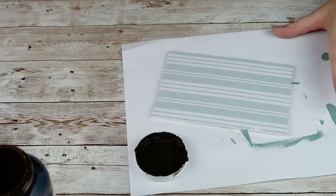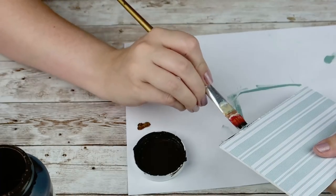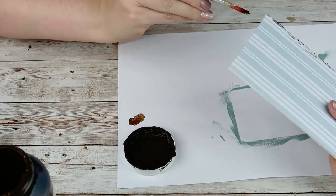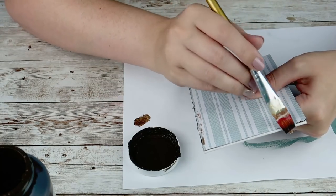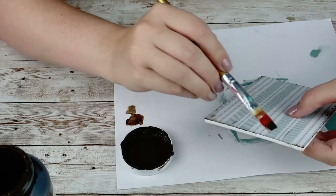Once that is on there I'm going to take some more of my Waverly Antique Wax and begin distressing my sign. I'm just going to go back and forth on the edges kind of dragging my paint brush towards the middle, then make some little distressed lines here and there throughout the middle of the sign.